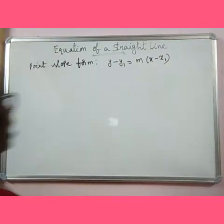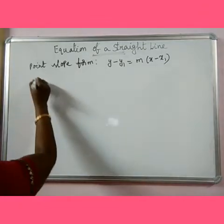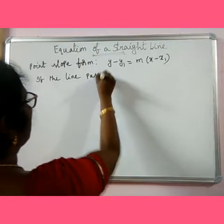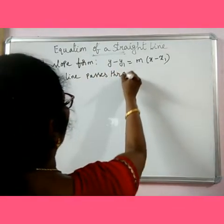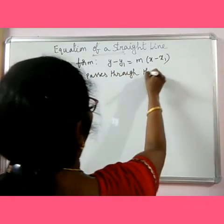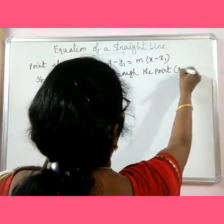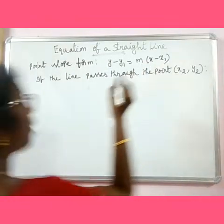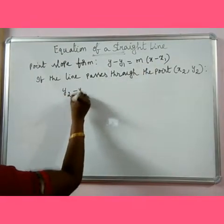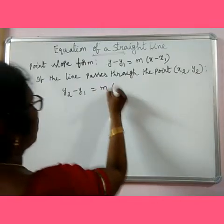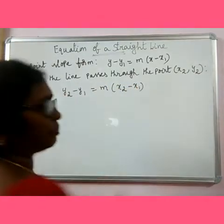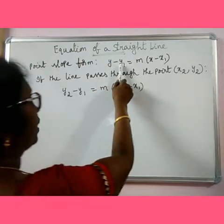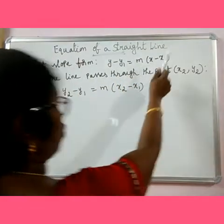Suppose this line passes through the point x2, y2 — then what happens? We get y2 minus y1 equal to m into x2 minus x1. So the difference of y coordinates equals m into difference of x coordinates.